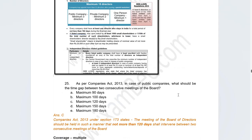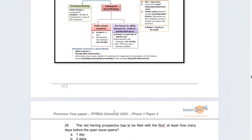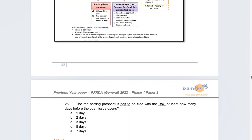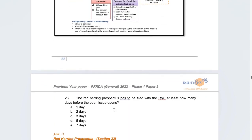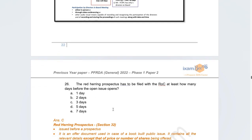The next question related to board meetings: what should be the maximum time period between two consecutive board meetings? The correct answer is 120 days. This was also covered in notes and questions.